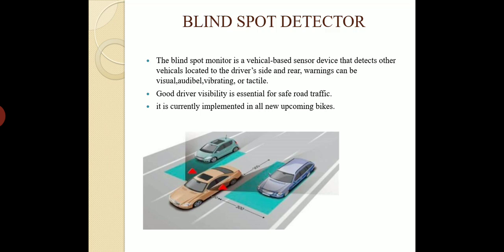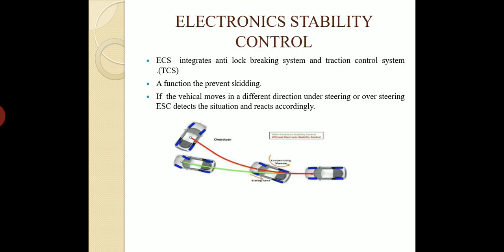Blind Spot Detector. A blind spot monitor is a vehicle-based sensor device that detects other vehicles located to the driver's side and rear. The warning can be visual, audible, vibrating, or tactile. Good driver visibility is essential for safe road traffic. It is currently implemented in all new upcoming bikes and cars. When going alone on the road and vehicles are approaching from the side, behind, or front at speed, the system provides an indication through vibration or sound — that is the Blind Spot Detector.